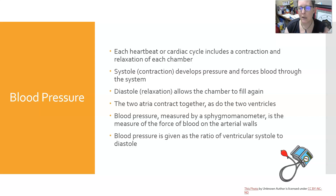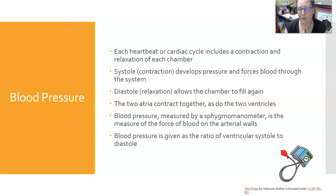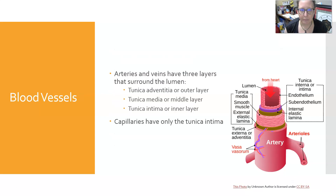Blood pressure measures both ventricular systole and diastole. Systole is the highest number because the ventricles are contracting and pumping blood into the aorta and arteries with full force — that's the maximum pressure. Diastole is the lowest number, representing when everything is relaxed. There's always some pressure in the arterial system, and that's what we measure — the pressure in the arterial system.